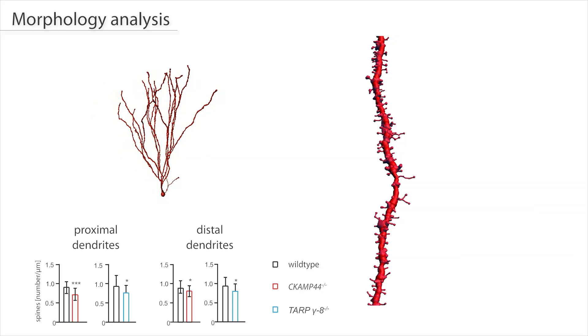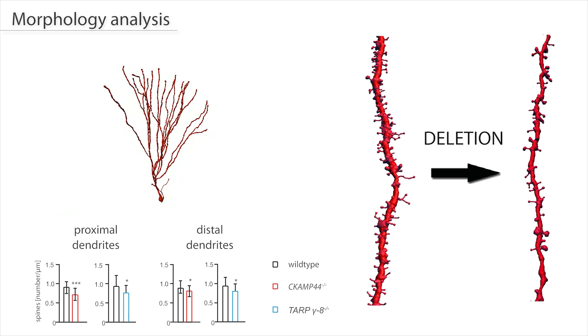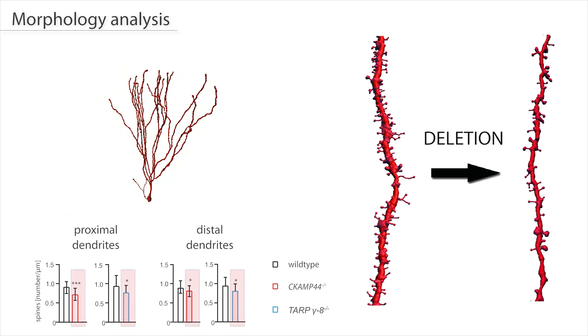Another surprising finding was that both proteins affect the morphology of dentate gyrus granule cells. Deletion of CKAMP44 and TARP-γ8 leads to a decrease in spine number on proximal and distal dendrites.